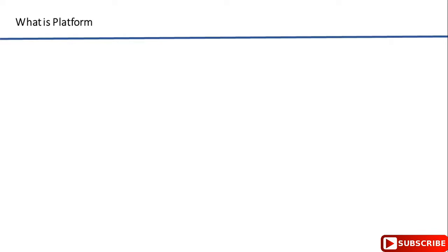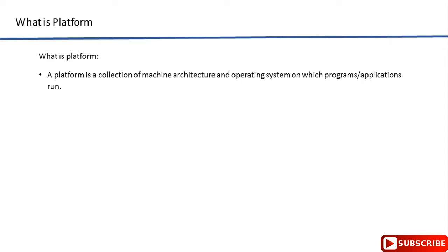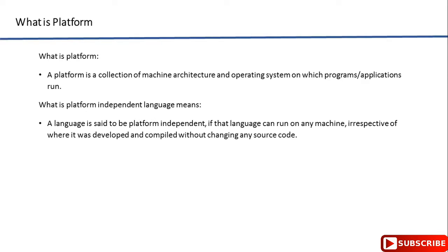First we will start our discussion with what is a platform. A platform is a collection of machine architecture and operating system on which programs or applications run. A language is said to be platform independent if that language can run on any machine irrespective of where it was developed and where it was compiled, without changing anything in the source code.